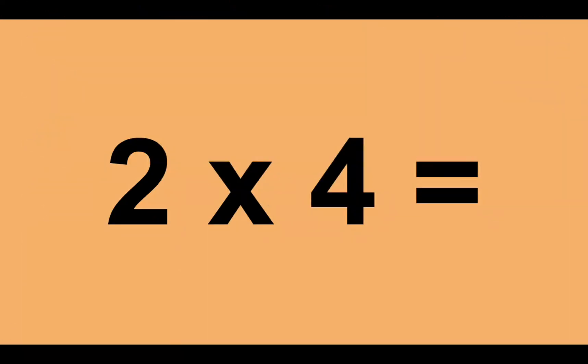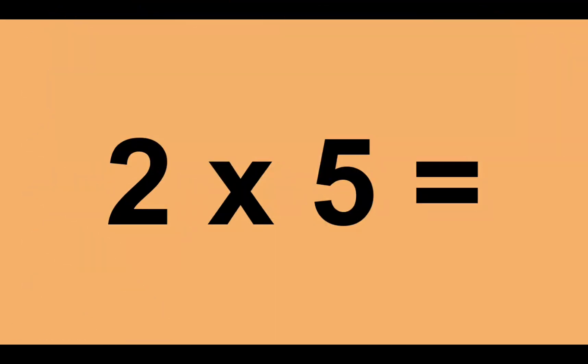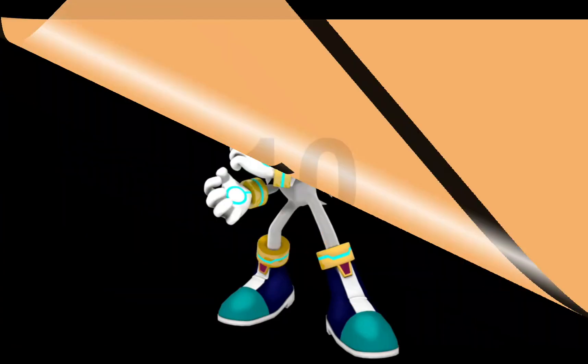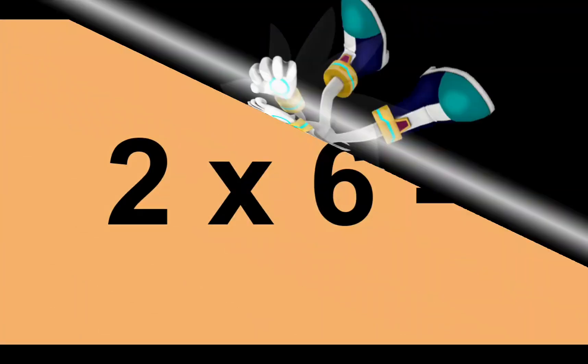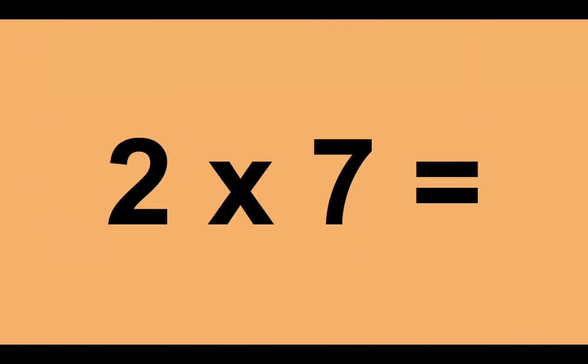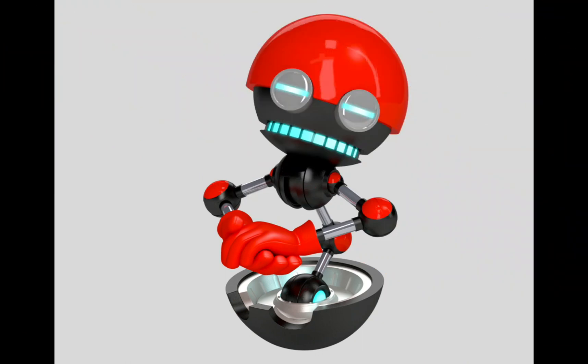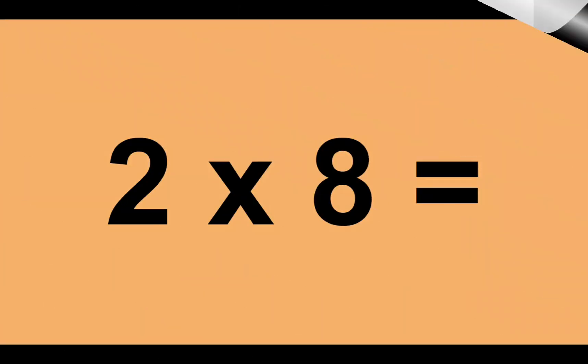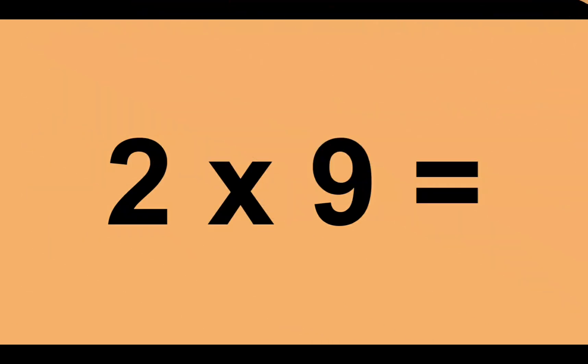Two times four equals eight. Two times five equals ten. Two times six equals twelve. Two times seven equals fourteen. Two times eight equals sixteen. Two times nine equals eighteen.